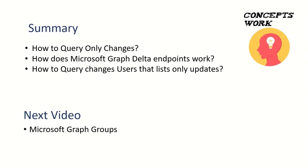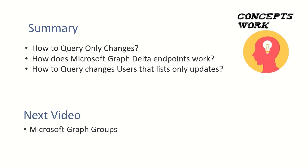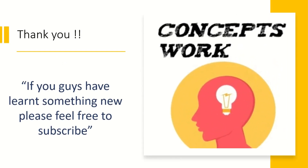Let's talk about a quick summary of what we discussed in this video. We covered how to run delta endpoint queries, what different attributes get listed, and which header you should use. In the next video, we will talk about Microsoft Graph Groups. If you think this channel is helping you learn something new, please feel free to share this with your technical community and subscribe. Thank you so much. Thanks for your time. Bye-bye.